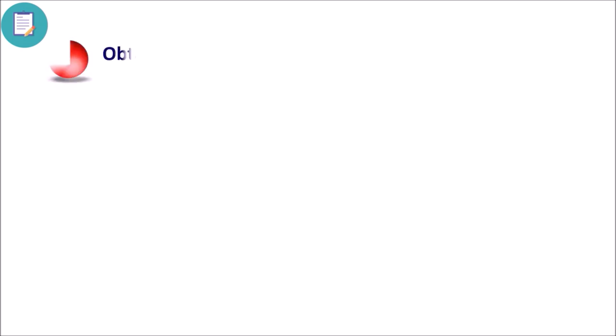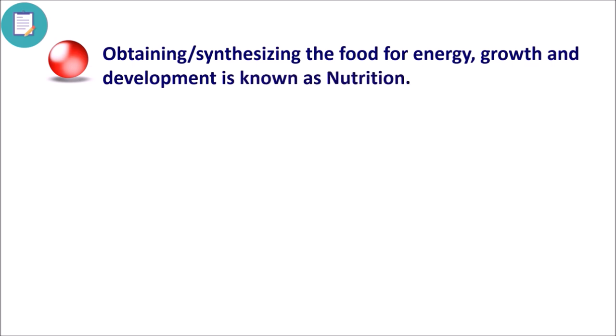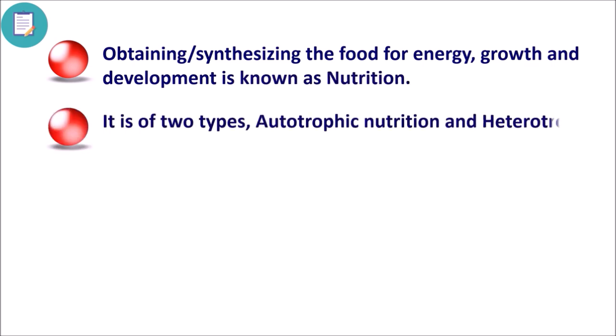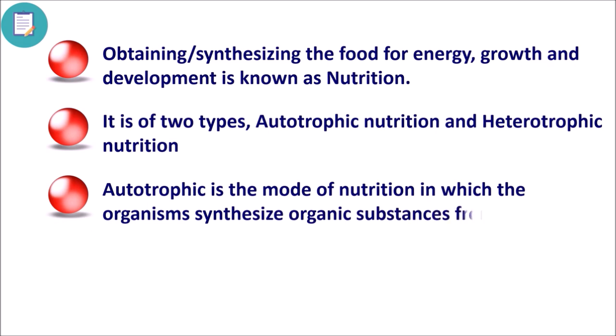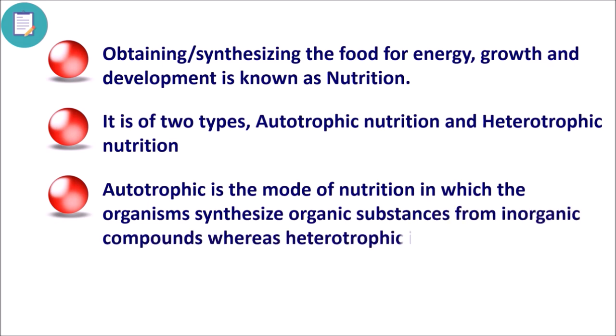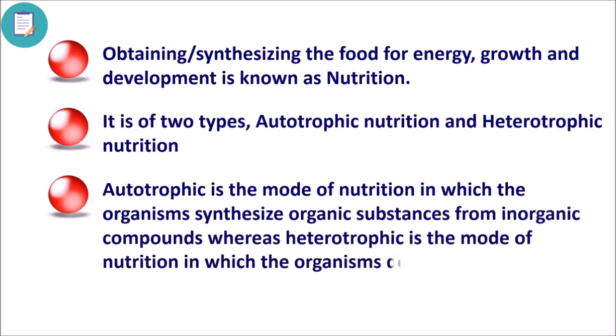Let me summarize what we have learned so far. Obtaining or synthesizing food for energy, growth, and development is known as nutrition. It is of two types: autotrophic nutrition and heterotrophic nutrition. Autotrophic nutrition is a mode in which organisms synthesize organic substances from inorganic compounds, whereas heterotrophic nutrition is a mode in which organisms depend on other organisms for food.